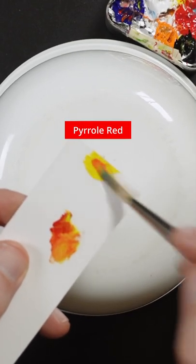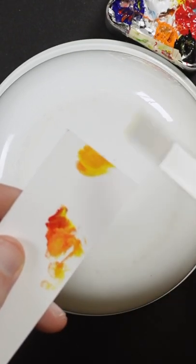Start with Hansa Yellow Opaque. It's a little more orange than you think it would be. It's probably too much. I need more yellow back in there.